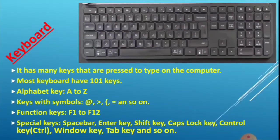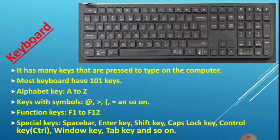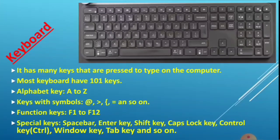Let's first look at the keyboard. Using the keyboard we can type anything on the computer. Most keyboards have 101 keys. A keyboard has different types of keys: alphabet keys from A to Z, keys with symbols like greater than, less than, equals to, etc., function keys from F1 to F12, and special keys like the space bar, enter key, and shift key.